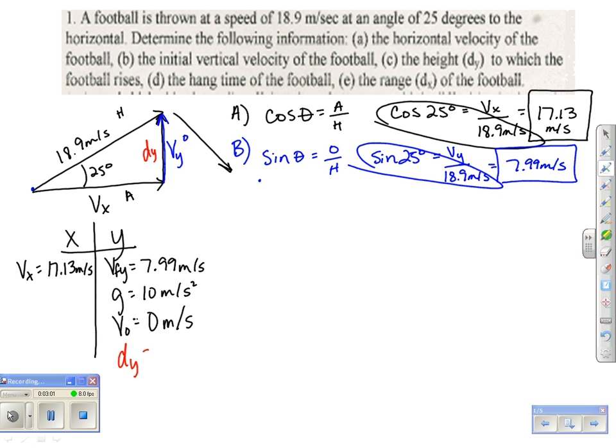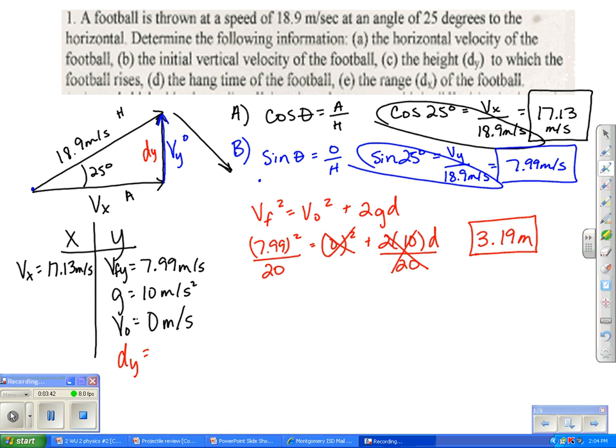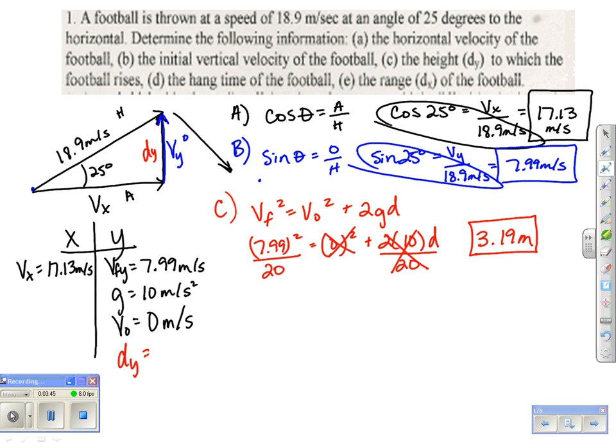It wants me to find Dy. To find Dy, there's a formula on your formula chart that actually says Vf squared equals Vo squared plus 2gd. If that's the case, I'm going to say 7.99 squared equals 0 squared plus 2 times 10 times d. I can cancel out the 0, divide by 20, isolate my variable. When you put that in your calculator, you should get an answer of 3.19 meters. So that's my Dy. This was Part C, and my answer was 3.19 meters. So I'm going to write that in my data table as well.